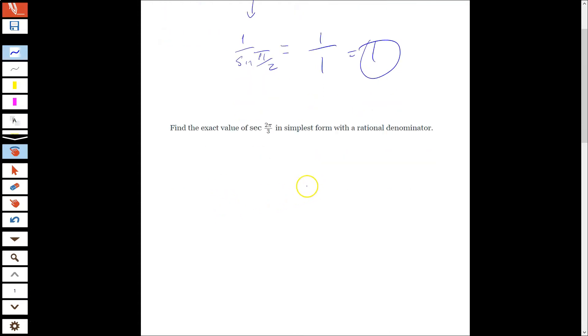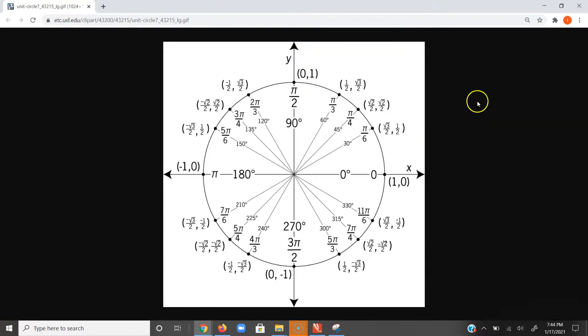And then secant 2π over 3. The thing to know about secant is that secant is 1 over cosine 2π over 3. And then again, by my unit circle, I'm going to find 2π over 3.